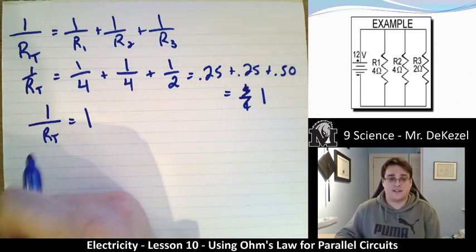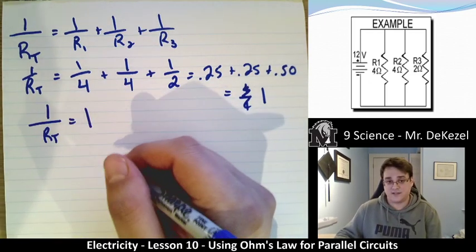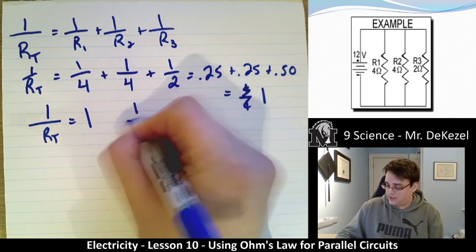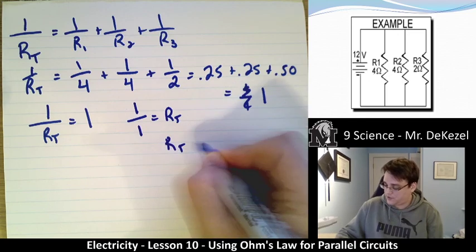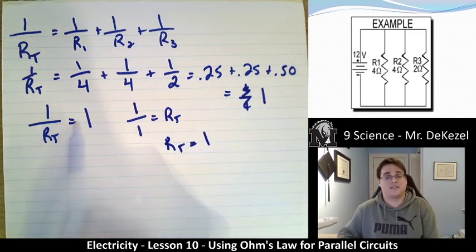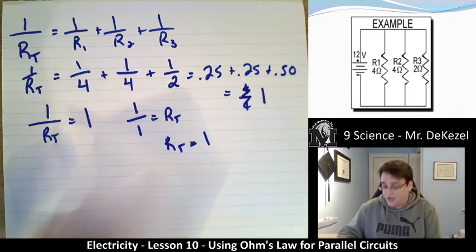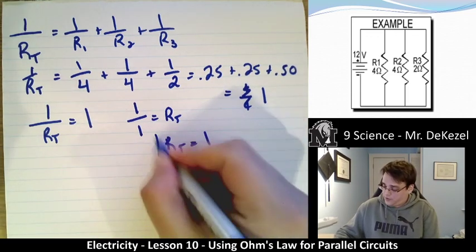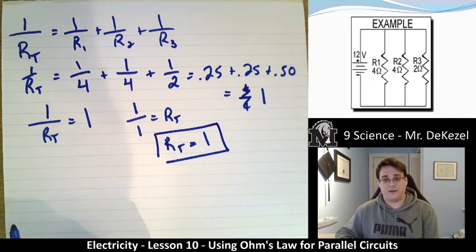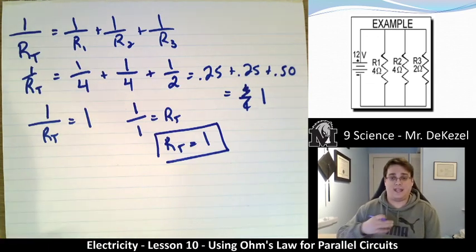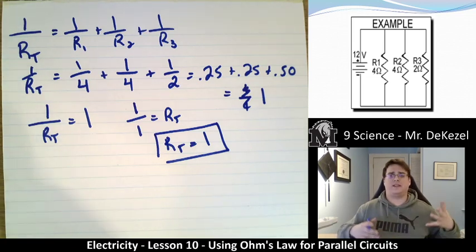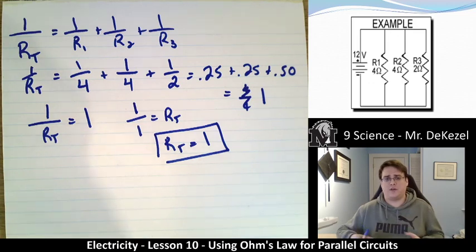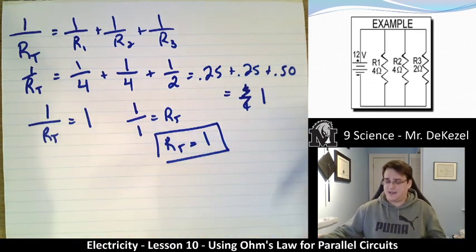To find the total resistance, I need to find 1 over this value. Since the sum is 1, then 1 divided by 1 gives us our total resistance of 1 ohm. I know this looks like a coincidence, and we're going to do some examples where the answer is different. But the total resistance for this circuit is 1 ohm, and you'll notice that this is less than any of the individual resistors: R1 is 4, R2 is 4, R3 is 2, and the total is 1. It has more pathways for current to flow down, so the total resistance is less.